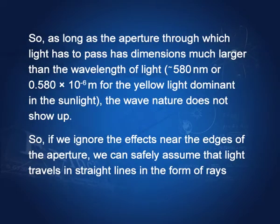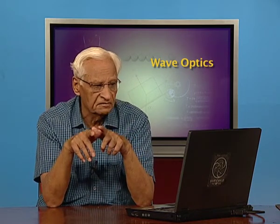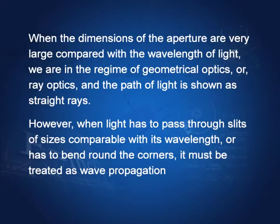If we ignore the effects near the edges of the aperture, we can safely assume that light travels in straight lines in the form of rays. When the dimensions of the aperture are very large compared with the wavelength of light, we are in the regime of geometrical optics or ray optics. However, when light has to pass through slits which are very narrow, whose sizes are of the order of the wavelength of light, then the light has to bend around the corners and it must be treated as wave propagation.